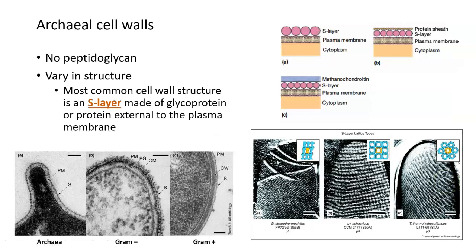Even though archaea are different from each other, they're very diverse, they all do share a commonality in that they do not have any peptidoglycan in their cell walls. Archaea do have cell walls, just like bacteria do, but we know that bacterial cell walls are mainly made of peptidoglycan. This molecule does not exist in any archaeal cell wall.